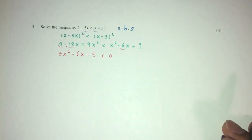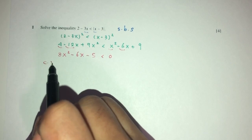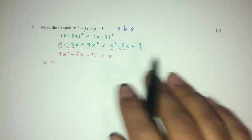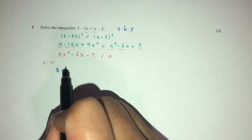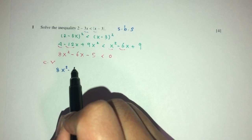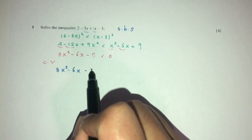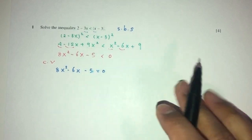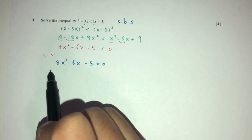Now, we have a quadratic equation, so we can find the critical values first. So, same equation, but we equate that to 0 to find the critical values.